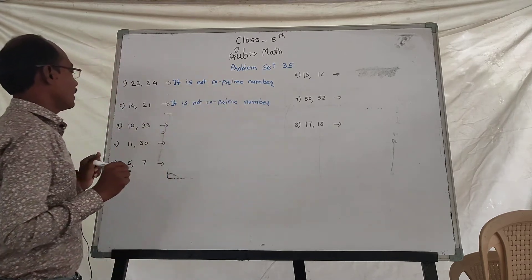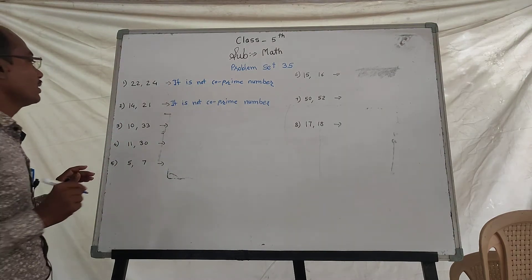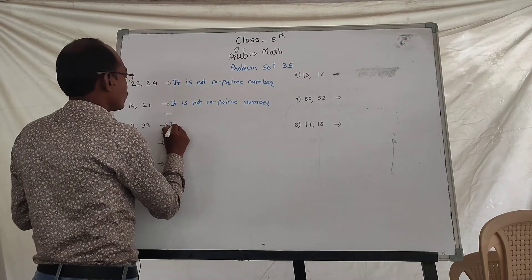Next, 13 and 31. They are not co-prime numbers.